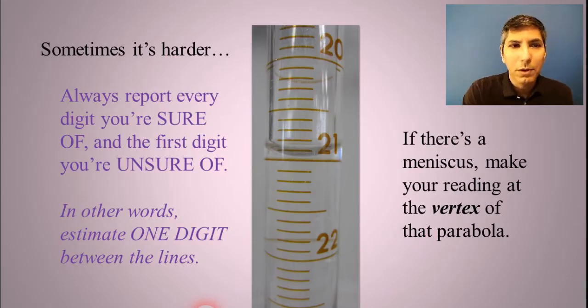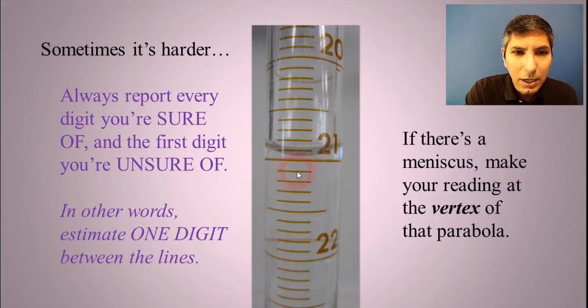Whenever you make a measurement, you always report every digit that you're sure of as well as the first digit that you're unsure of. So what that means is you have to read between the lines. We can see it's between 20 and 21, so it's 20 point something. And it's between 20.9 and 21.0, so it's 20.9 something. So we have to read between those lines.